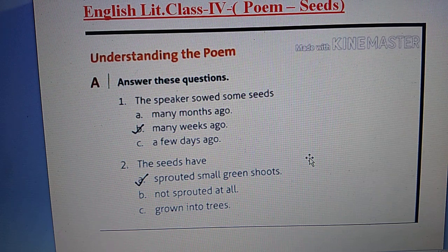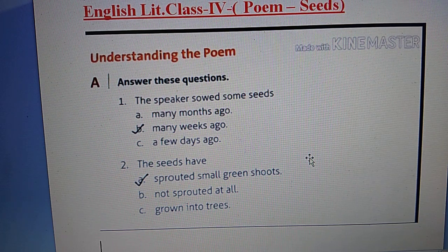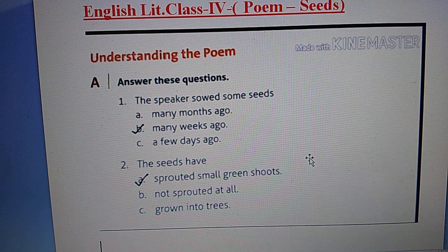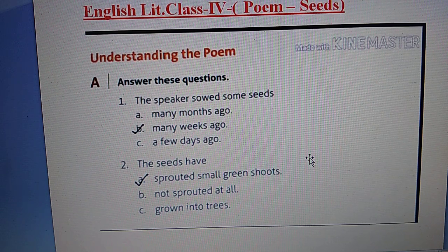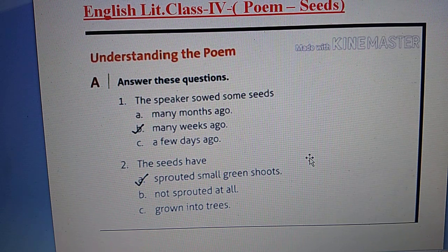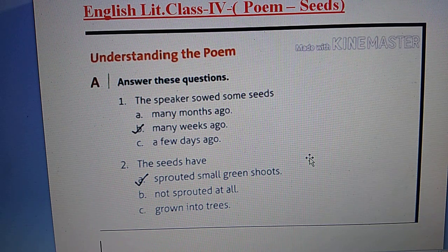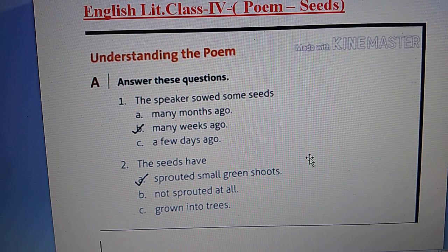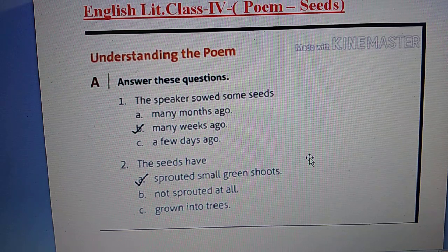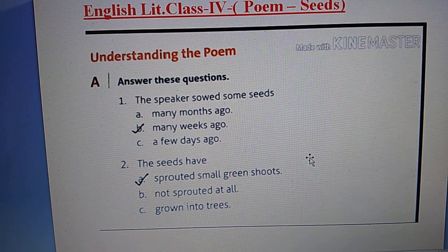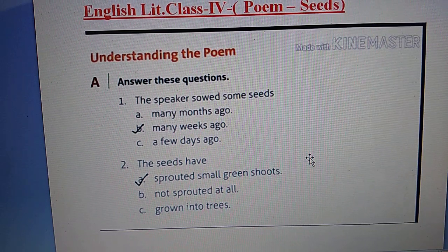Second, the seeds have: A. Sprouted small green shoots. B. Not sprouted at all. C. Grown into trees. The answer will be A — sprouted small green shoots.